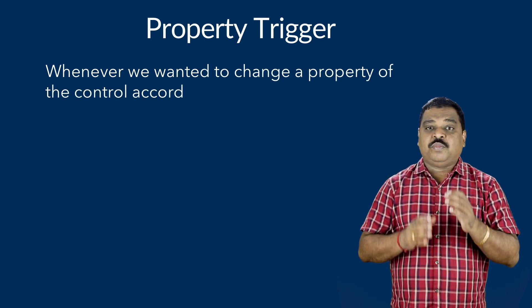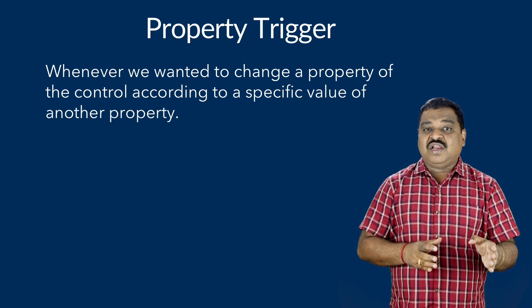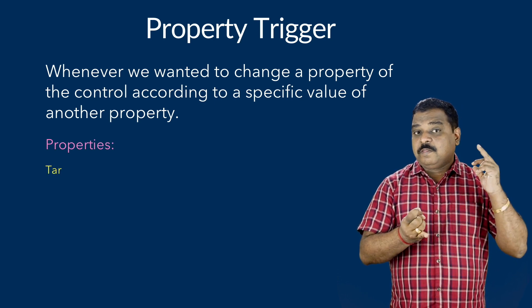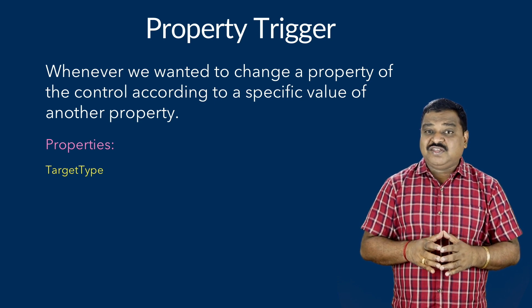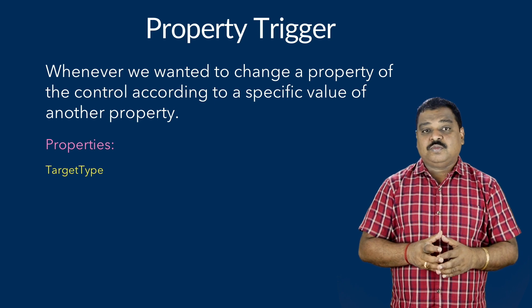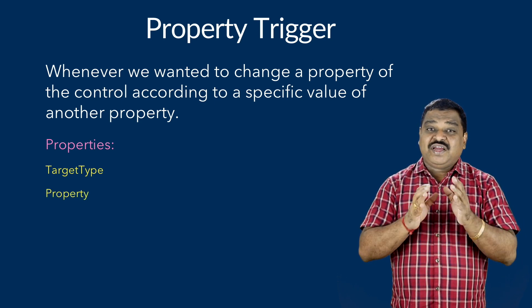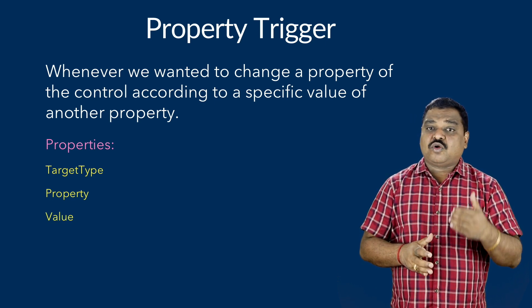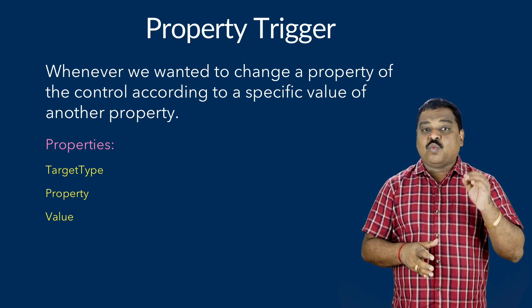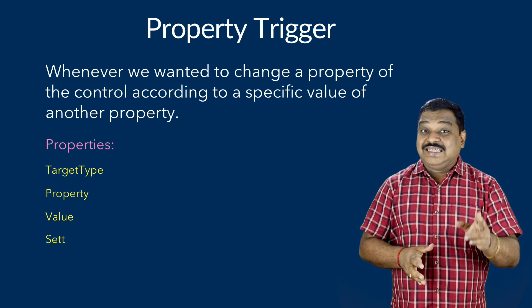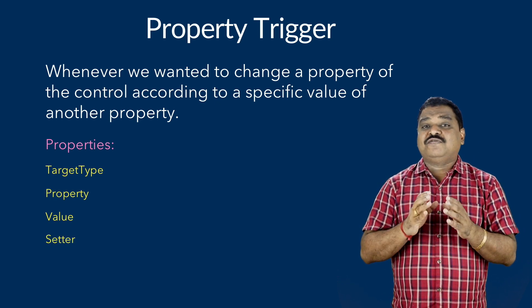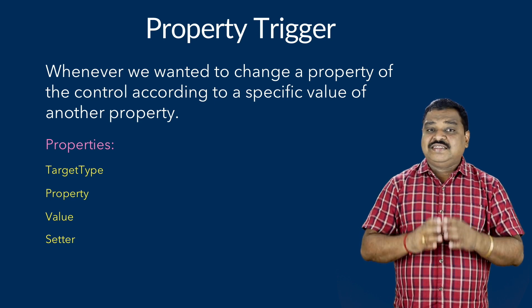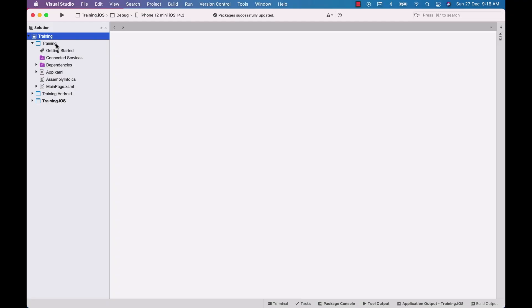Let us start with property triggers. Property triggers are used whenever we want to change a property of a control according to a specific value of another control. In order to define the triggers, the following details are required: target type — to specify the control type the trigger applies to; property — the property to monitor; value — the value that causes the trigger to activate; and setter — a collection of setter elements that should be applied when the trigger condition is valid.